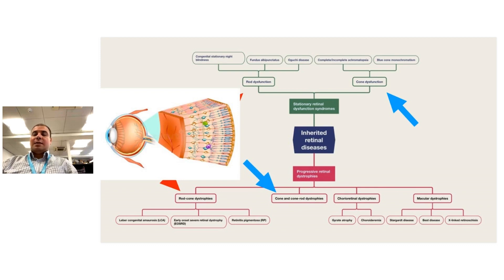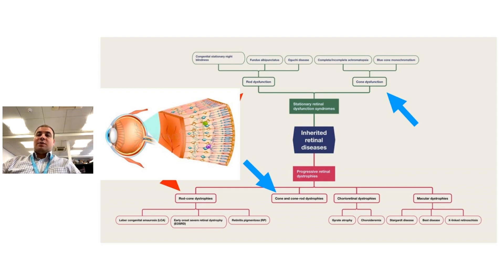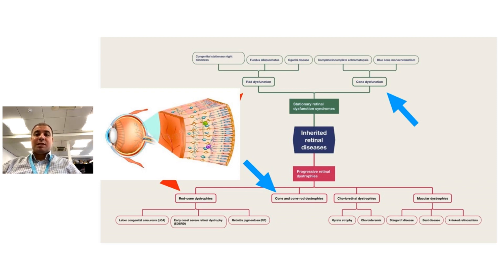The way we see is that photons of light come inside the eye, cross the entire transparent media of the eye, and hit the photoreceptors on the back part of the retina. This unleashes a cascade of events, and the information gets sent to the inner layers of the retina, which then send electrical impulses for the brain to interpret. For stationary retinal dysfunction syndromes like congenital stationary night blindness, this is an inner retinal disease — further down the pathway. Progressive retinal dystrophies are usually on the first part of the processing of photons of light.